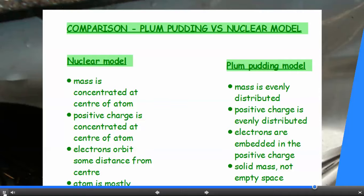In the nuclear model, the positive charge is concentrated at the centre of the atom, but in the plum pudding model, the positive charge is evenly distributed.